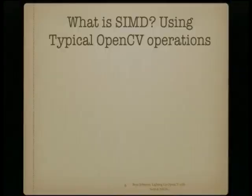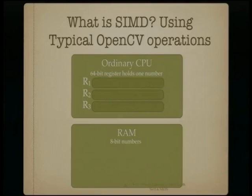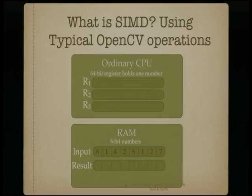What is SIMD — single instruction, multiple data? Say you wanted to increase the pixel intensity of every element by two. With an ordinary CPU, we have a 64-bit register that holds one number. We have 8-bit numbers in RAM — eight 1-byte numbers as input. We preload the value 2 into register 2, perform a regular load from the first element of the input array into register 1, perform a regular addition, store the result in register 3, and save to the result array, repeating for all seven other elements. Overall: 8 loads, 8 additions, and 8 saves.